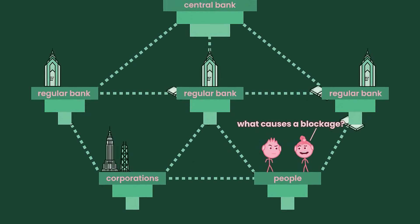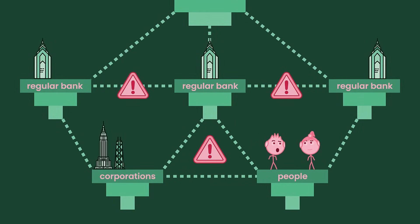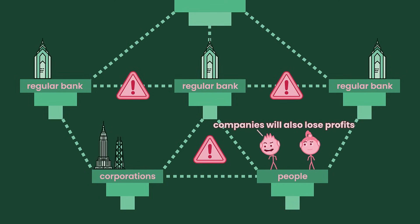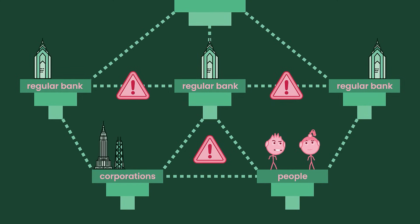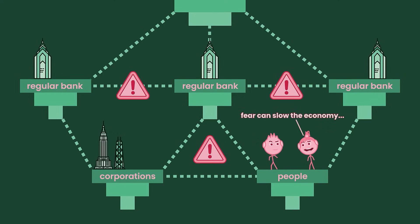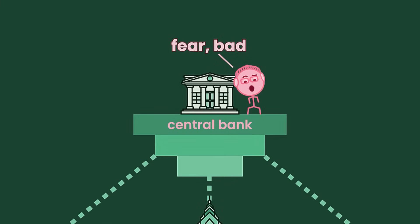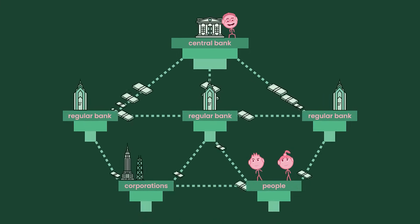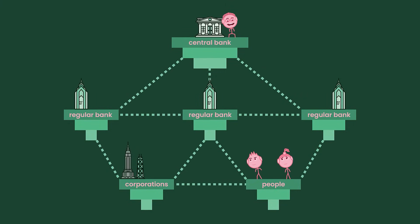What causes a blockage? Widespread fear. People borrowing money from banks or buying products from companies becomes risky — they want to save instead. If people are not spending money on products, companies will also lose profits or go bankrupt. Fear also happens between the regular banks; they will stop lending to each other due to the risk of not getting their money back. So fear can slow the economy, and the central bank doesn't like that. Injecting more money into the economy gets it going again. I have two weapons at my disposal: lowering interest rates or buying assets.